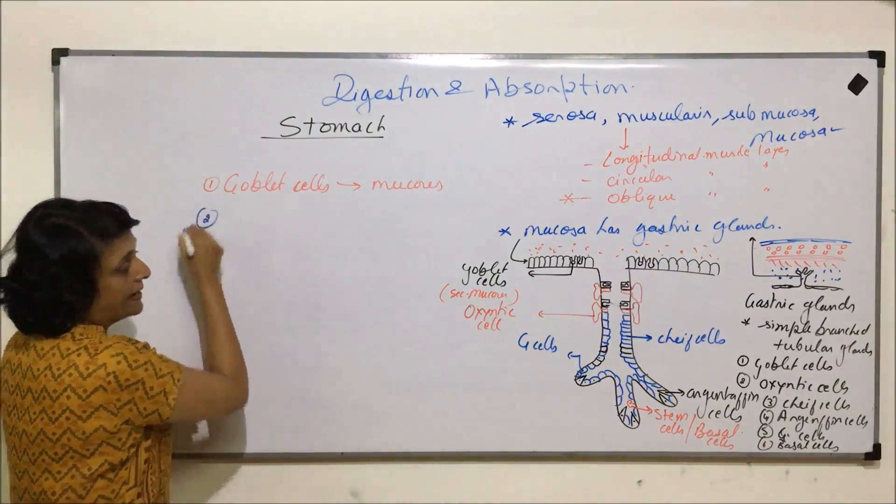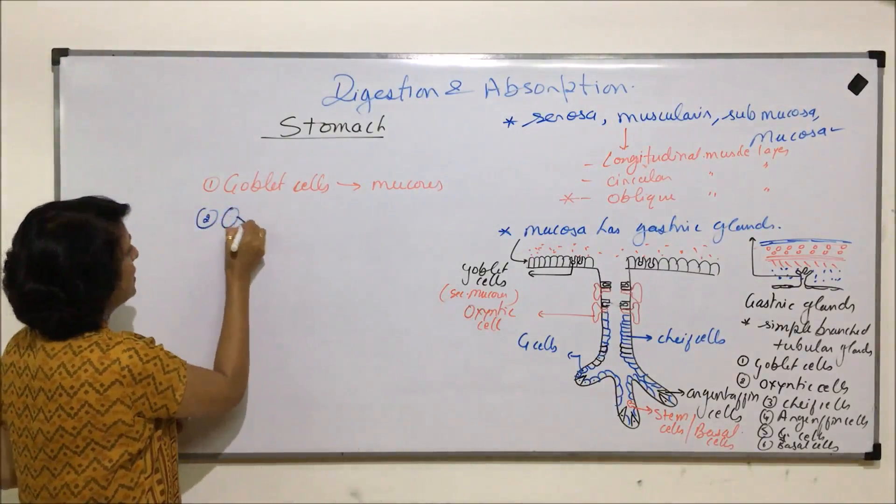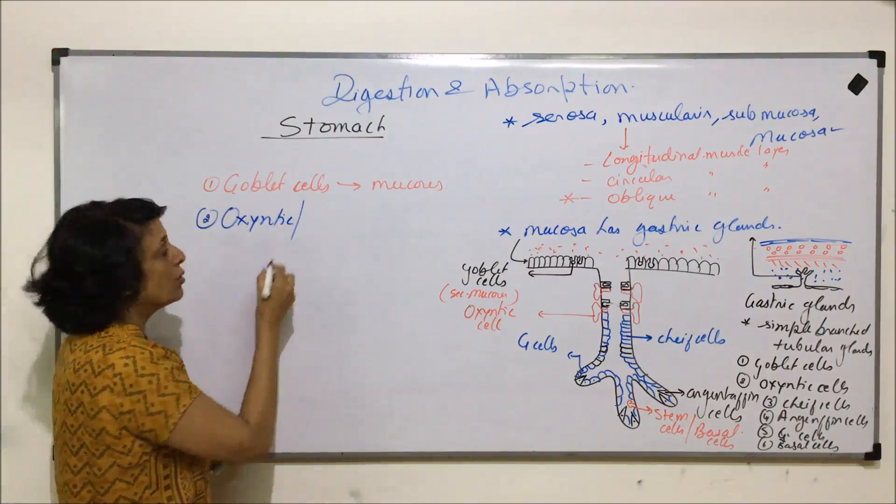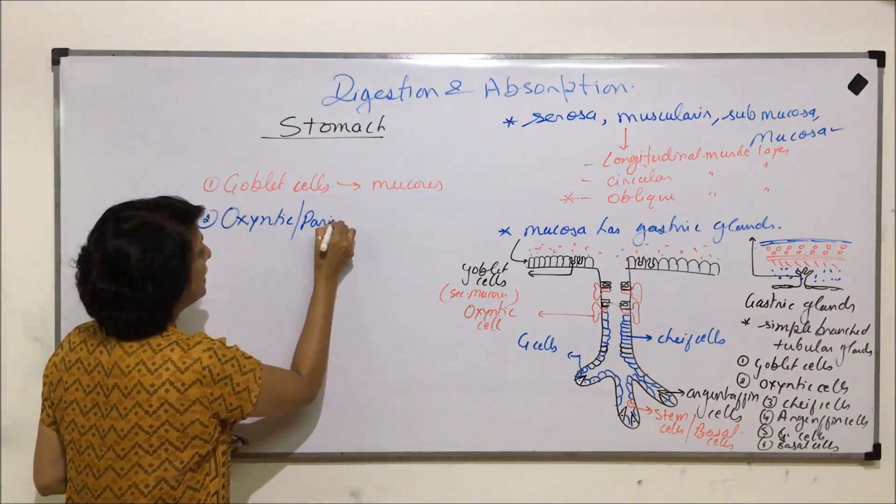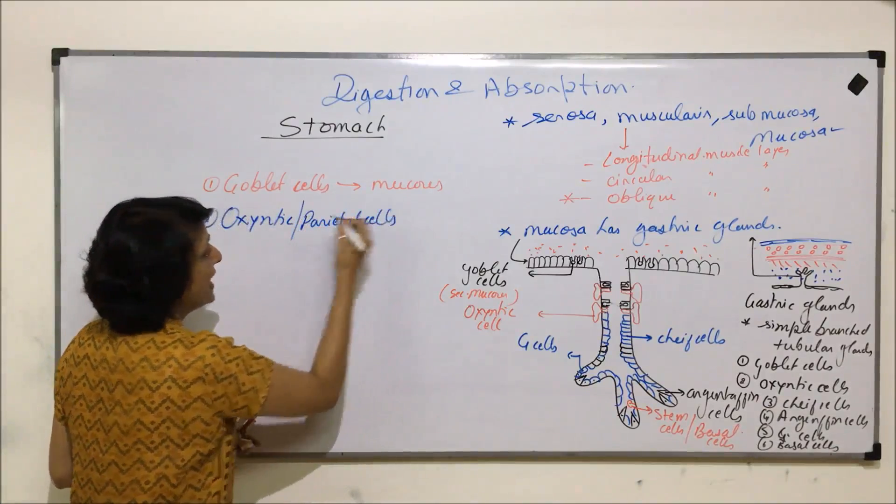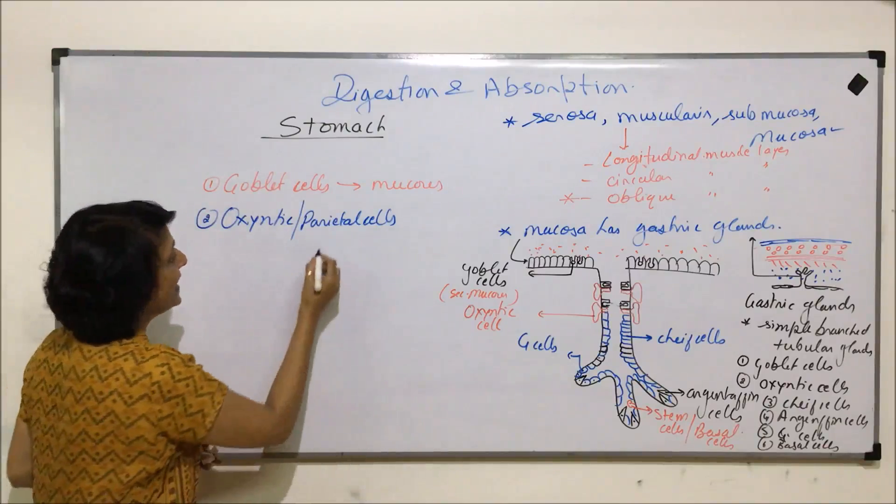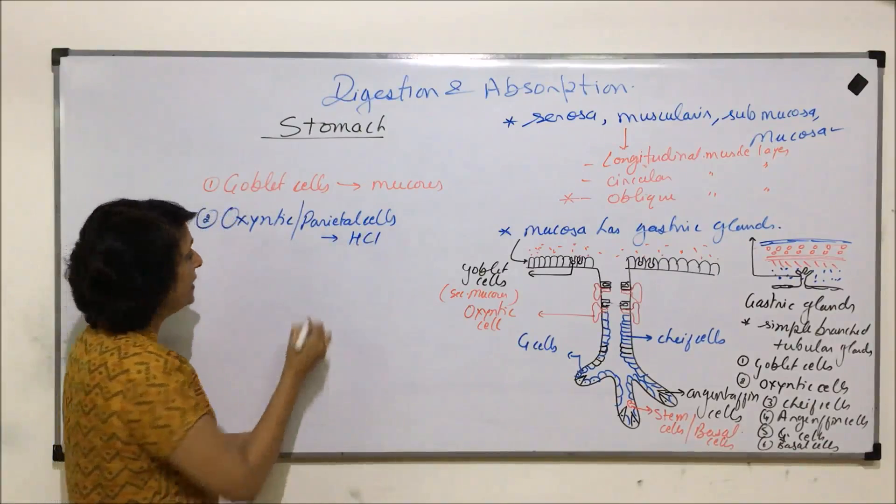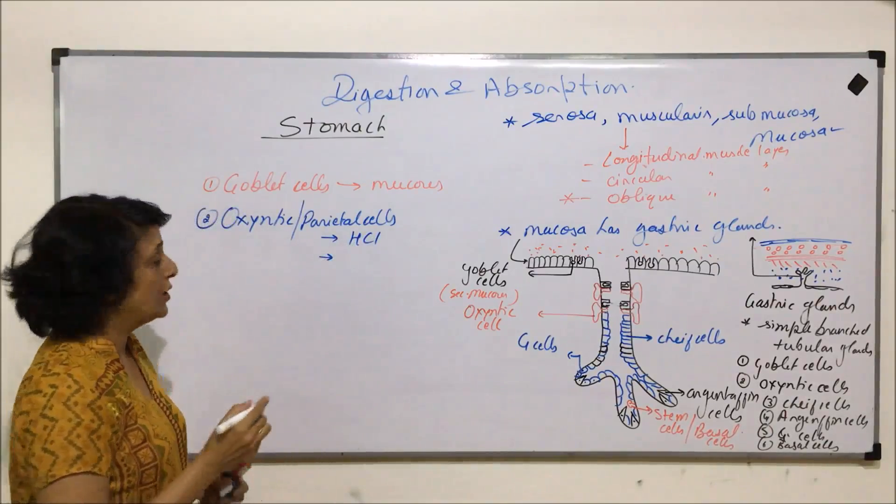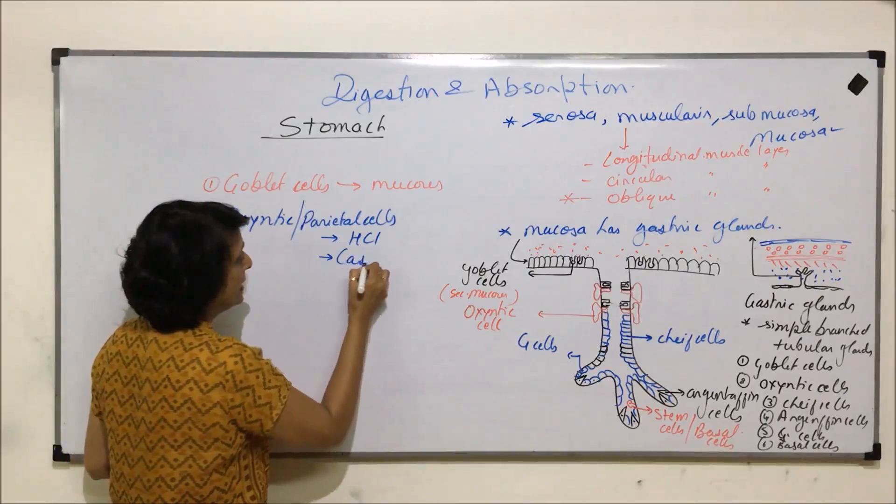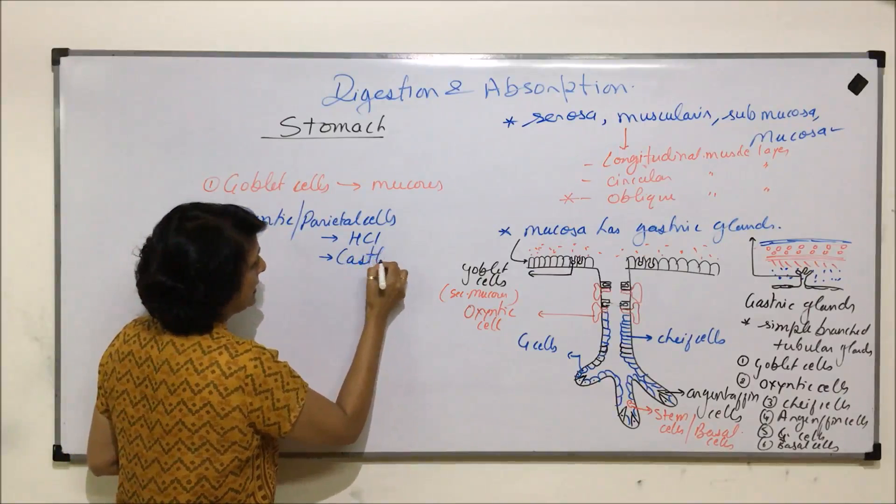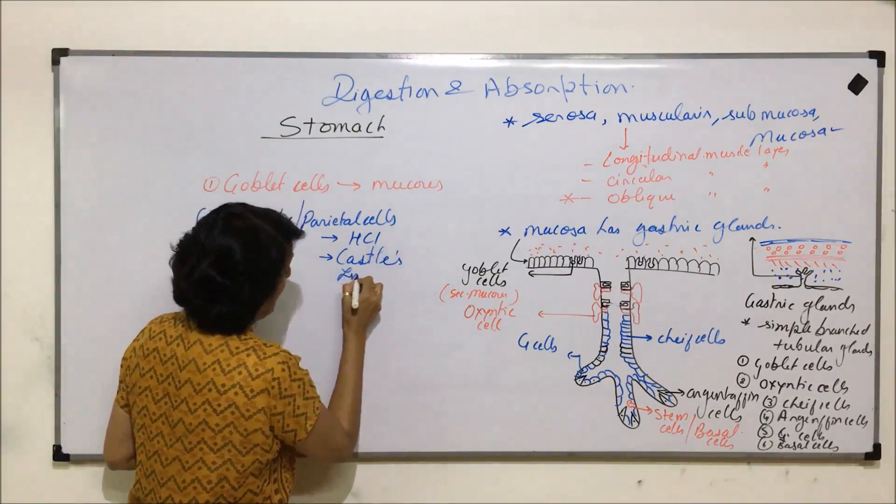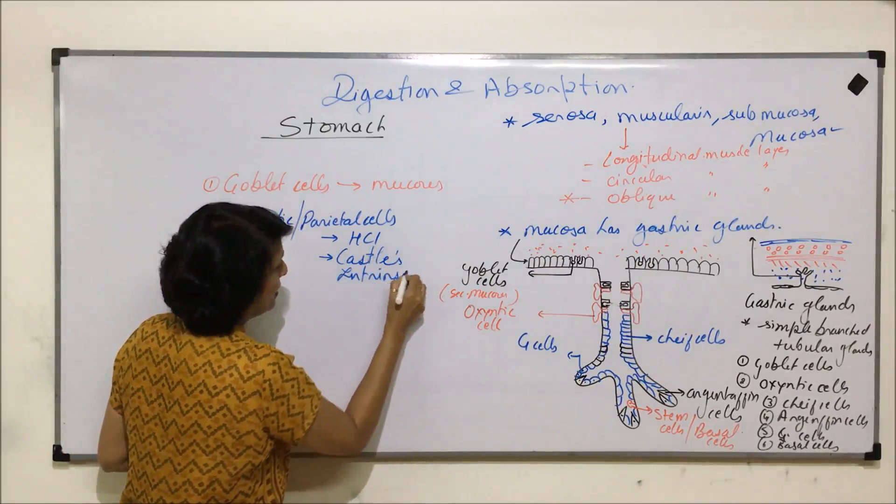The second one, that is oxantic cells. Oxantic cells are also known as parietal cells and they secrete hydrochloric acid and a factor which is known as castle's intrinsic factor.